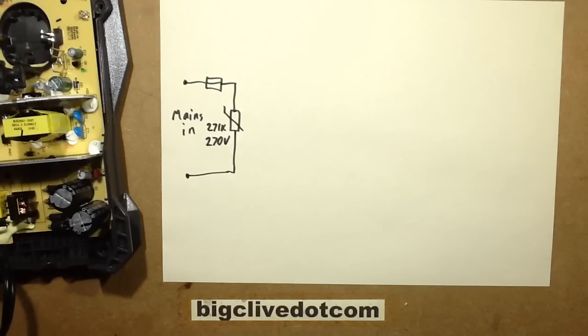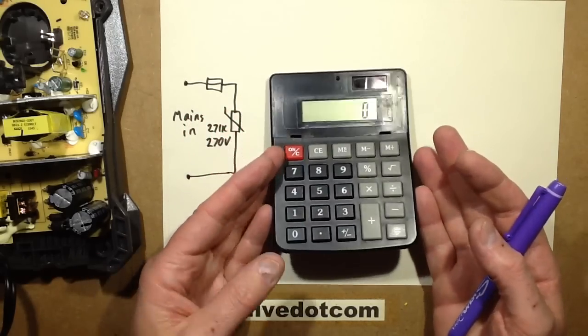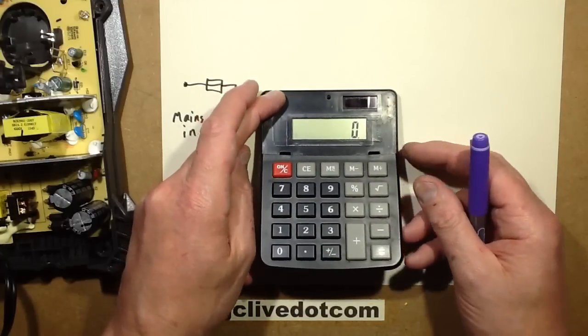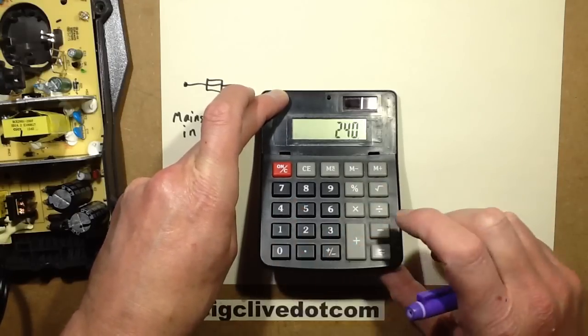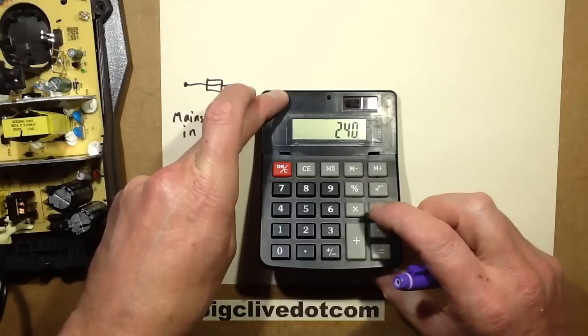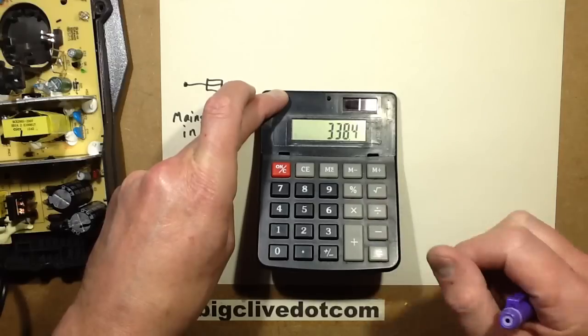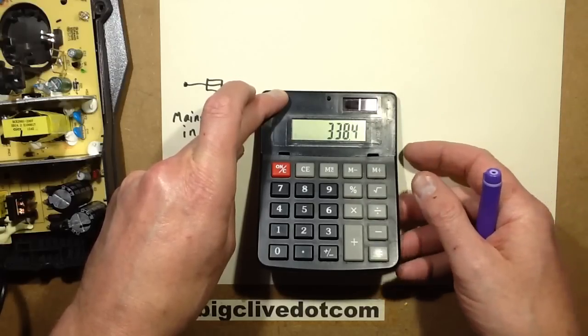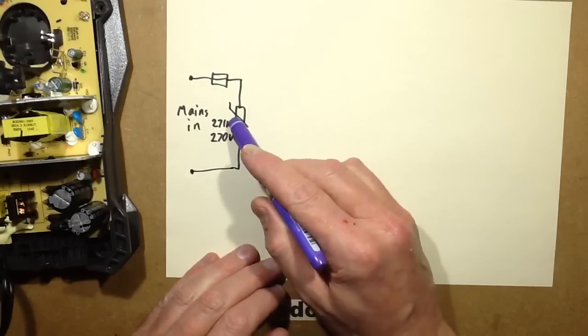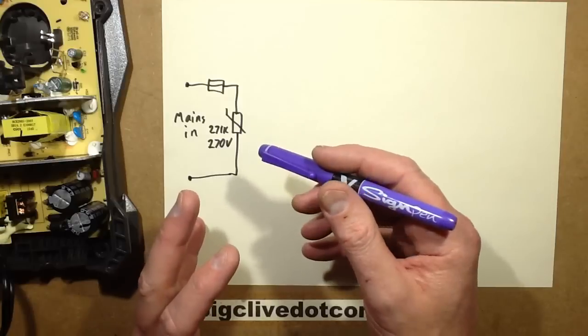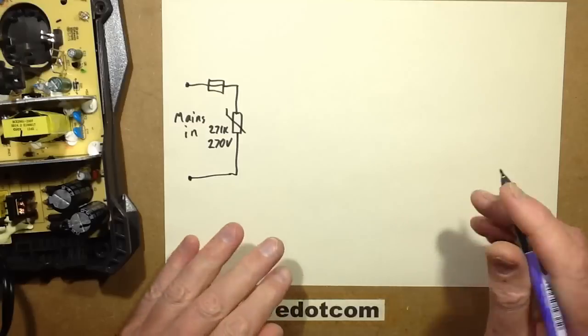If you work out the peak voltage of the mains supply, say for instance in the UK our supply is 240 volts, supposed to be 230 volts to comply with European regulations but it is actually 240 volts still. So we take 240 volts and that's the RMS value. If you multiply it by 1.41 that gives you the peak value which is roughly 338 volts. So that's in excess of this voltage.